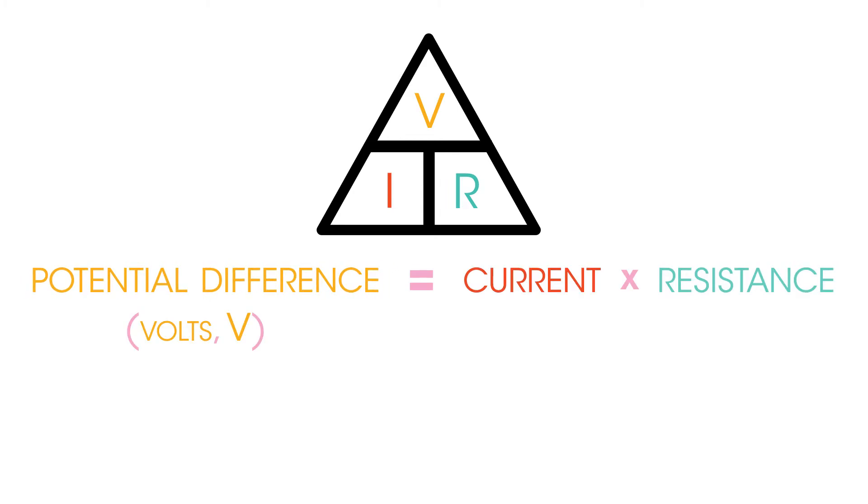Potential difference, or voltage, is measured in volts V and is shown by the symbol V. Current is measured in amperes and is described in equations by a capital I. This originally comes from the French phrase intensity de current, meaning current intensity. Resistance is measured in ohms which are shown using this symbol and is represented by a capital R.